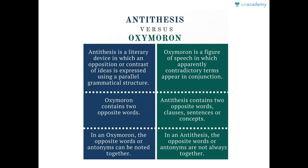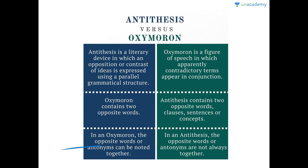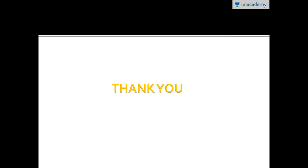Here is the difference between antithesis and oxymoron, since one can get confused between the two. Antithesis is a literary device in which an opposition or contrast of ideas is expressed using parallel grammatical structure. An oxymoron is a figure of speech in which apparently contradicting terms appear in conjunction. Oxymoron contains two opposite words, while antithesis can contain two opposite words, clauses, sentences, or concepts. In oxymoron, the opposite words are noted together; in antithesis, opposite words are not always noted together. Thank you for watching — rate, review, recommend and share, and let me know in the comments if you have any queries.